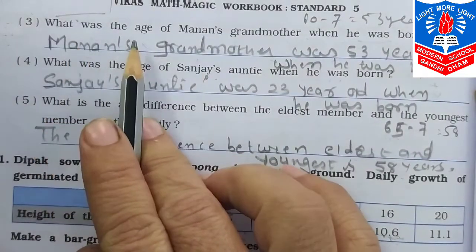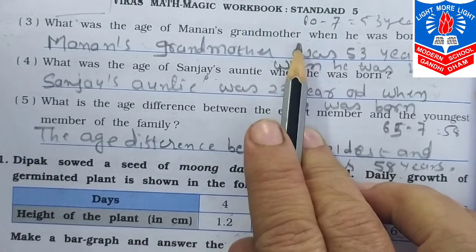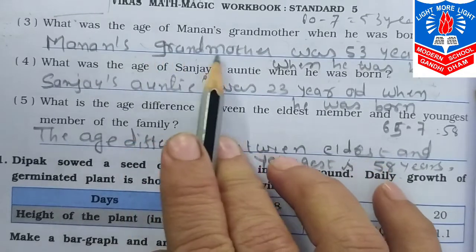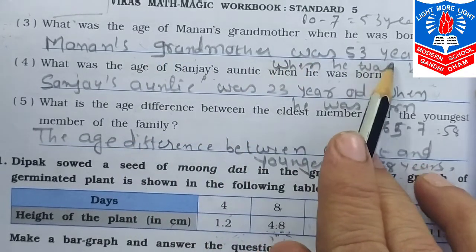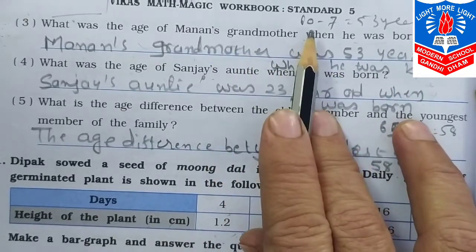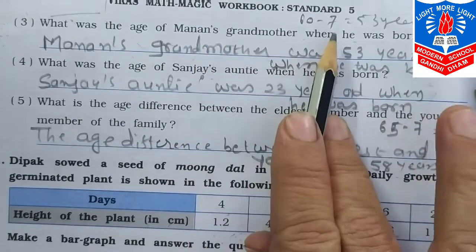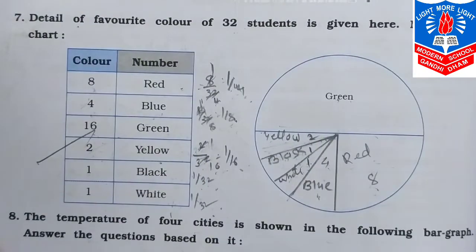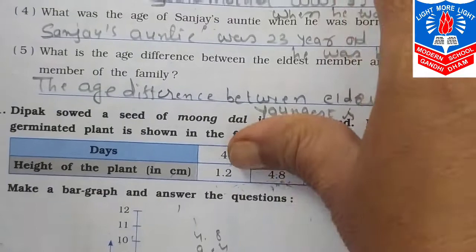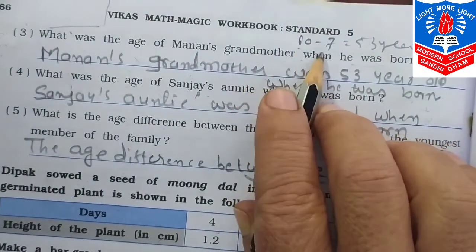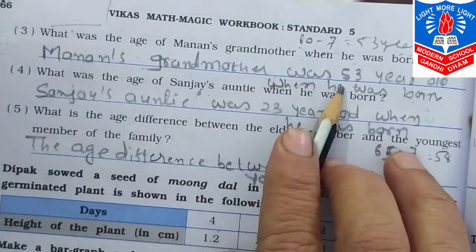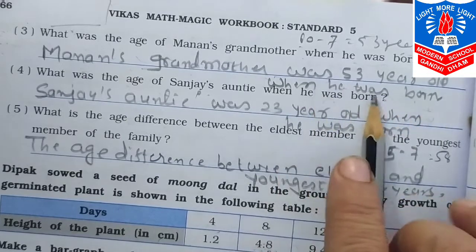What was the age of Manan's grandmother when he was born? The age of grandmother is 60 years and Manan is 7 years old. So 60 minus 7 equals 53 years. Manan's grandmother was 53 years old when he was born.